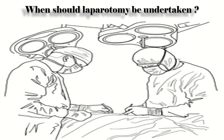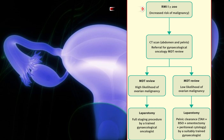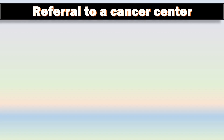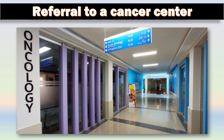Transvaginal extraction of the specimen is also acceptable if the surgeon has available expertise. When should laparotomy be undertaken? All ovarian cysts suspicious of malignancy in a postmenopausal woman — as indicated by RMI 1 ≥200, CT findings, clinical assessment, or findings at laparoscopy — require full laparotomy and staging procedure. If malignancy is revealed during laparoscopy or from subsequent histology, it is recommended that women be referred to a cancer center for further management.